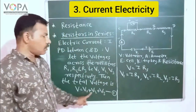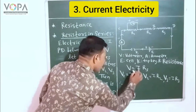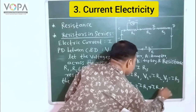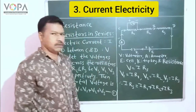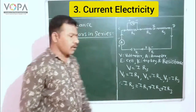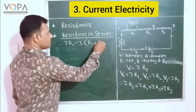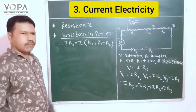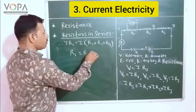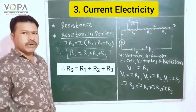Now substituting these values in equation number 1, we have V = V1 + V2 + V3, so I × RS = I × R1 + I × R2 + I × R3. Taking I common from these three terms, we have I × RS = I × (R1 + R2 + R3). Now dividing both sides by I, we get RS = R1 + R2 + R3.